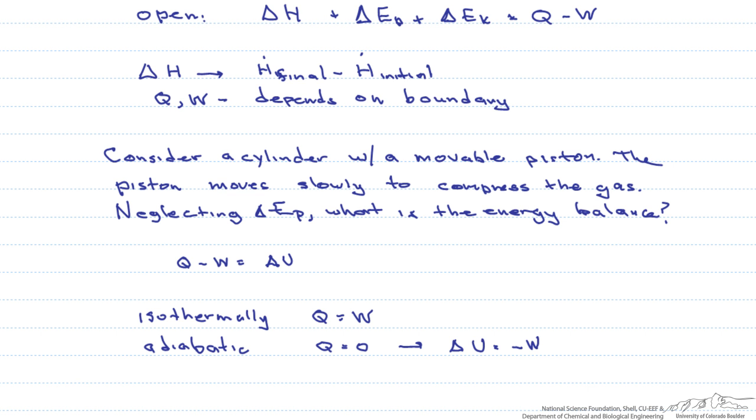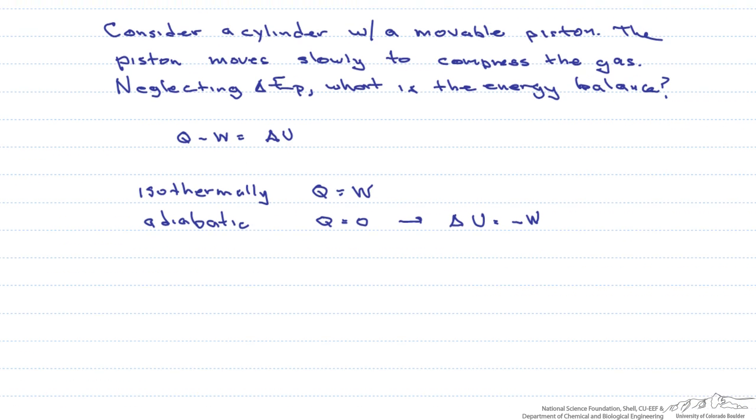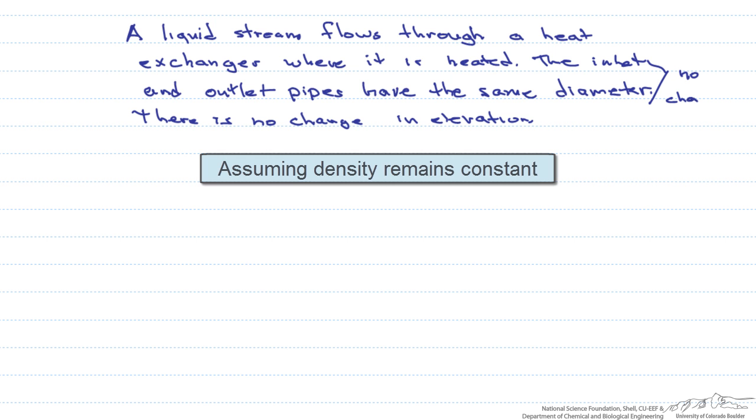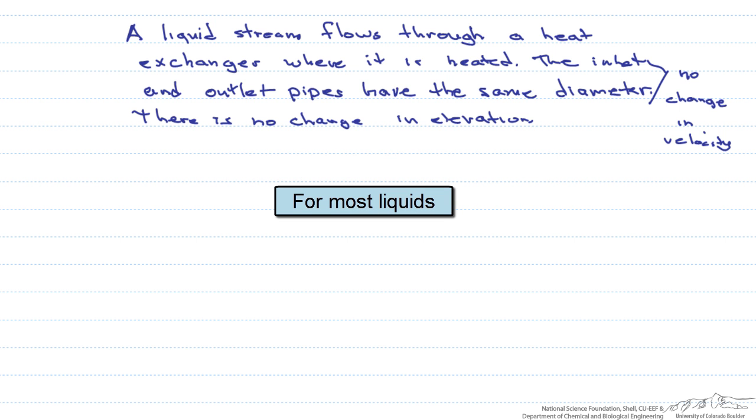Now, let's look at an example of an open system. Here we have a liquid stream that flows through a heat exchanger where it is heated, and we know that the inlet and outlet pipes have the same diameter, and that there is no change in elevation. Let's look here. If the inlet and outlet pipes have the same diameter, then there is no change in velocity. Note that we said that it was a liquid stream, which implies that density is constant.